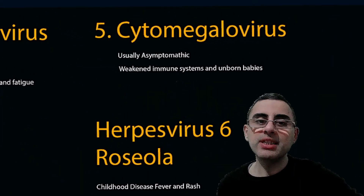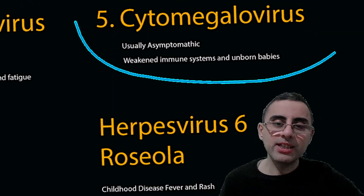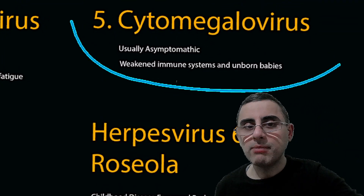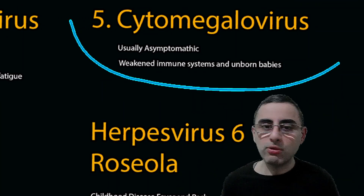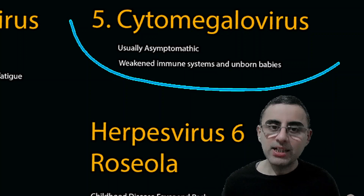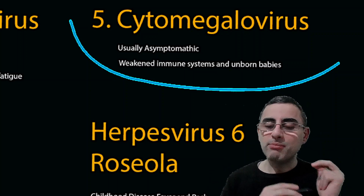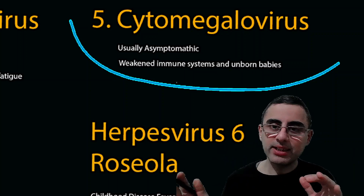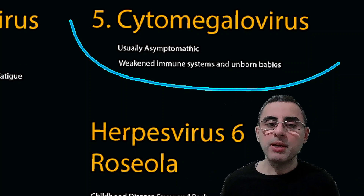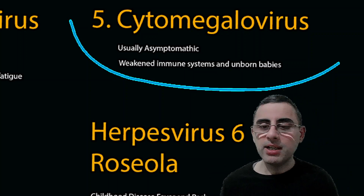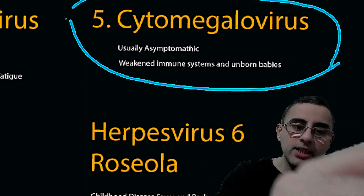The fifth is cytomegalovirus. Cytomegalovirus is usually asymptomatic — a person may have this infection, but it remains latent for life with no symptoms or manifestations. However, in people with a weakened immune system or in unborn babies, it can cause severe infection. So for pregnant women, cytomegalovirus can be risky.